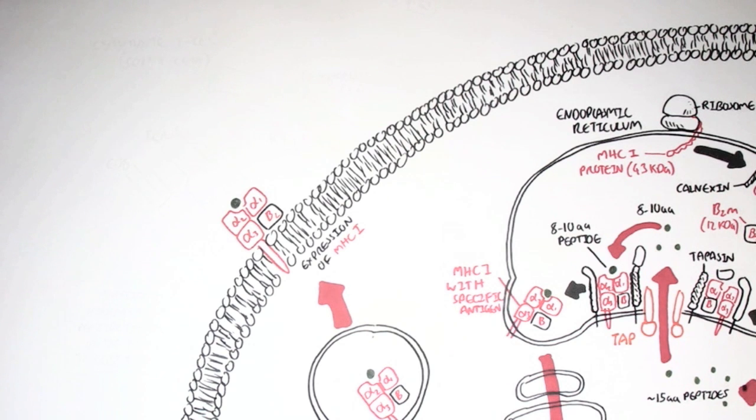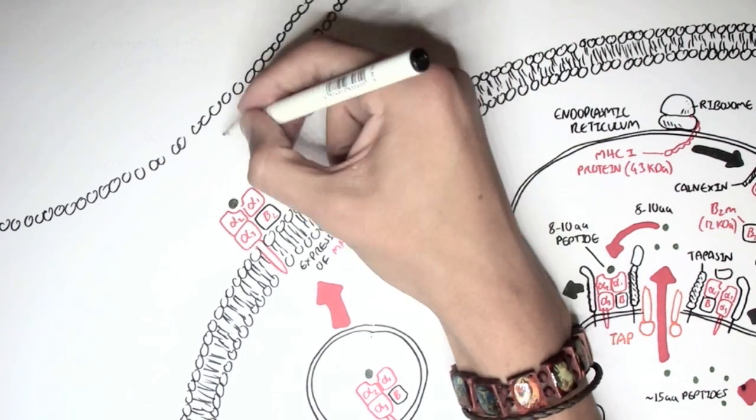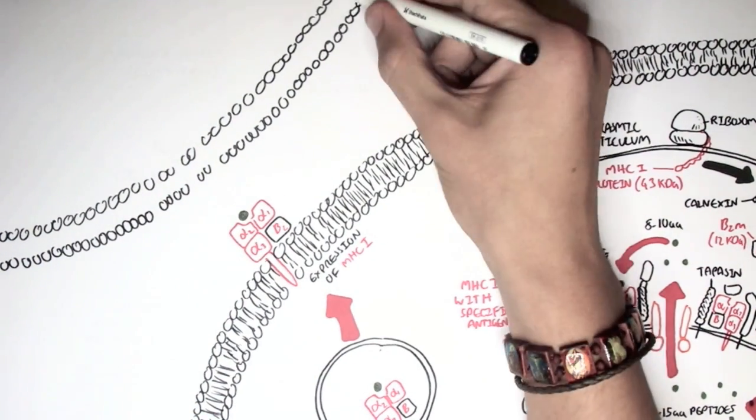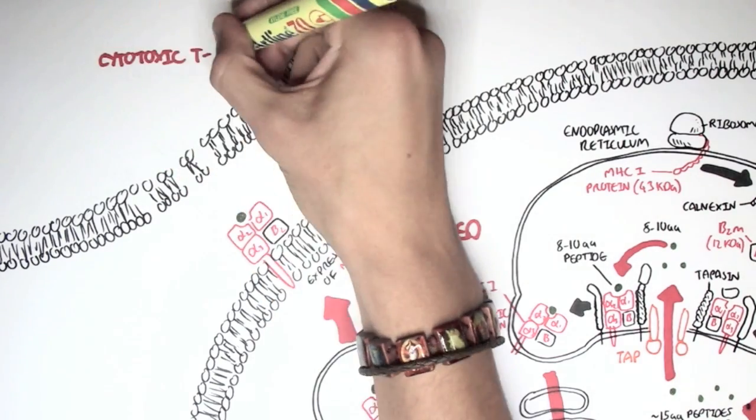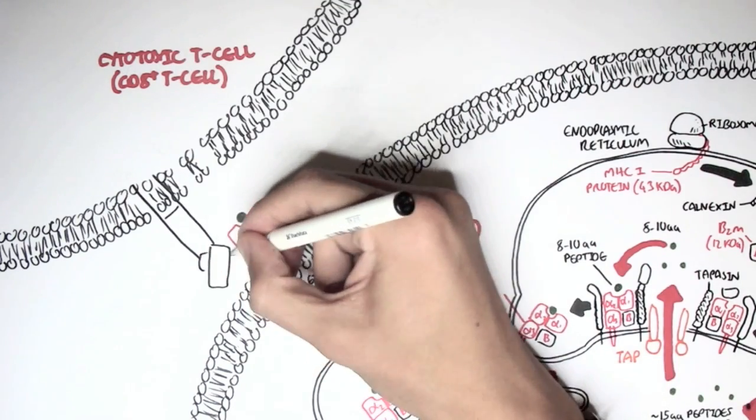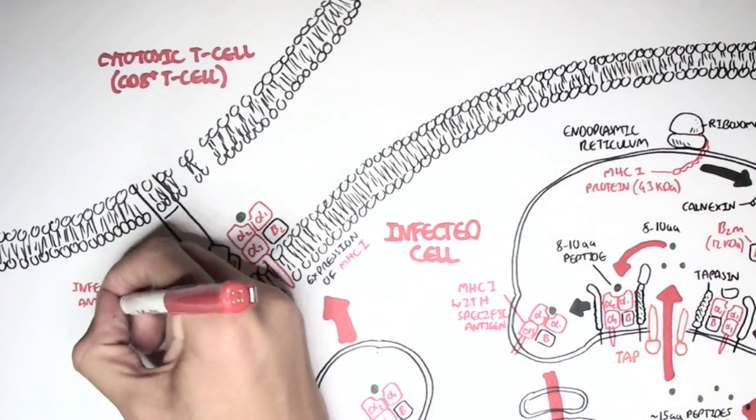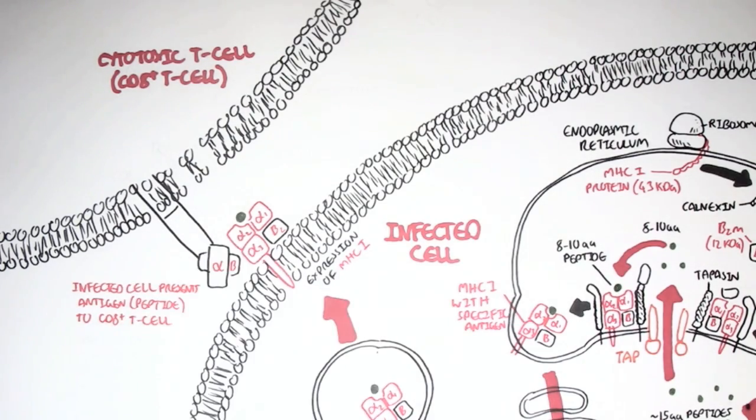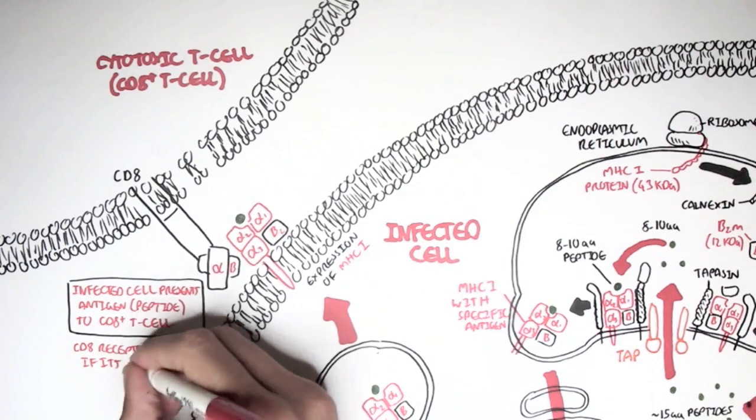And now the MHC class 1 being expressed on the cell surface with the small peptide will wait for interaction with a CD8 T cell, a cytotoxic T cell. The MHC class 1 will only interact with the CD8 T cell, and so we can say that it is CD8 T cell restricted. So, again, this is our infected cell, and here is a cytotoxic T cell, a CD8 T cell. The cytotoxic T cell, the CD8 T cell contains few types of receptors, one of which is this receptor. This is a CD8 receptor. And it will interact with the MHC class 1 molecule. So what happens is the infected cell will present the antigen, the peptide, to a CD8 T cell. Then, the CD8 receptor will check if it's an MHC class 1 being expressed, because the CD8 only interacts with MHC class 1.